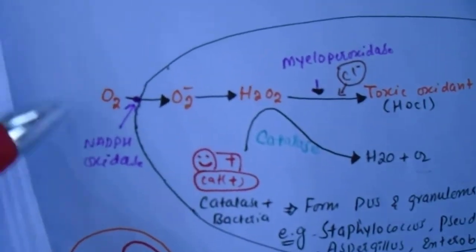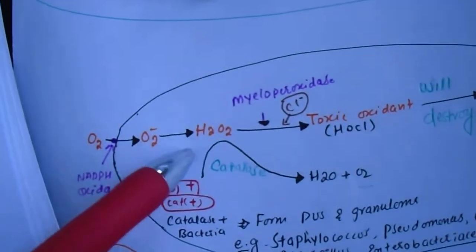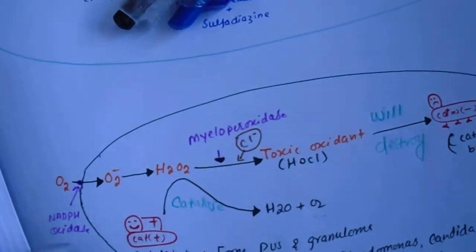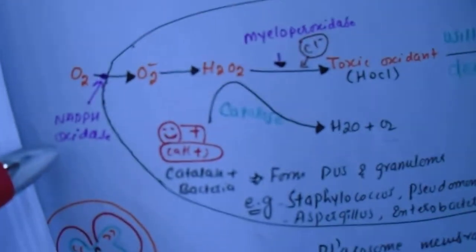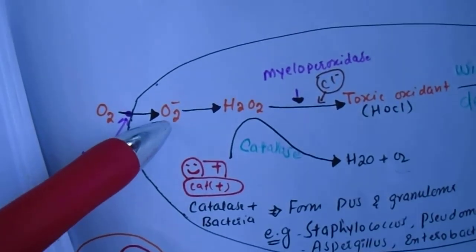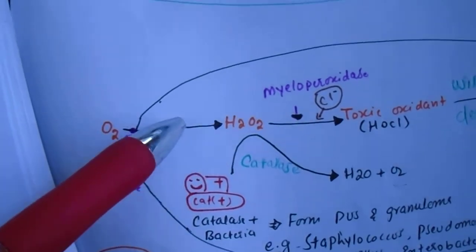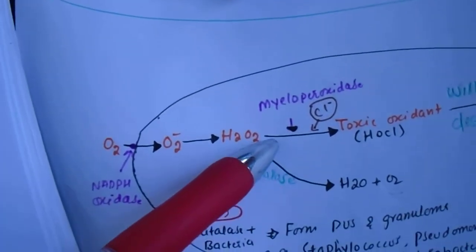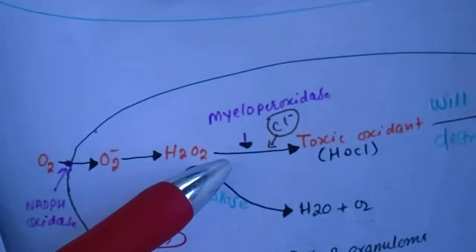Here you can see this is the phagosome, which is present in the macrophage. This is the mechanism of hydrogen peroxide production during the oxygen-dependent killing mechanism. Here you can see oxygen, with the help of NADPH oxidase, is converted into superoxide. Then superoxide, with the addition of another electron, converts into hydrogen peroxide.